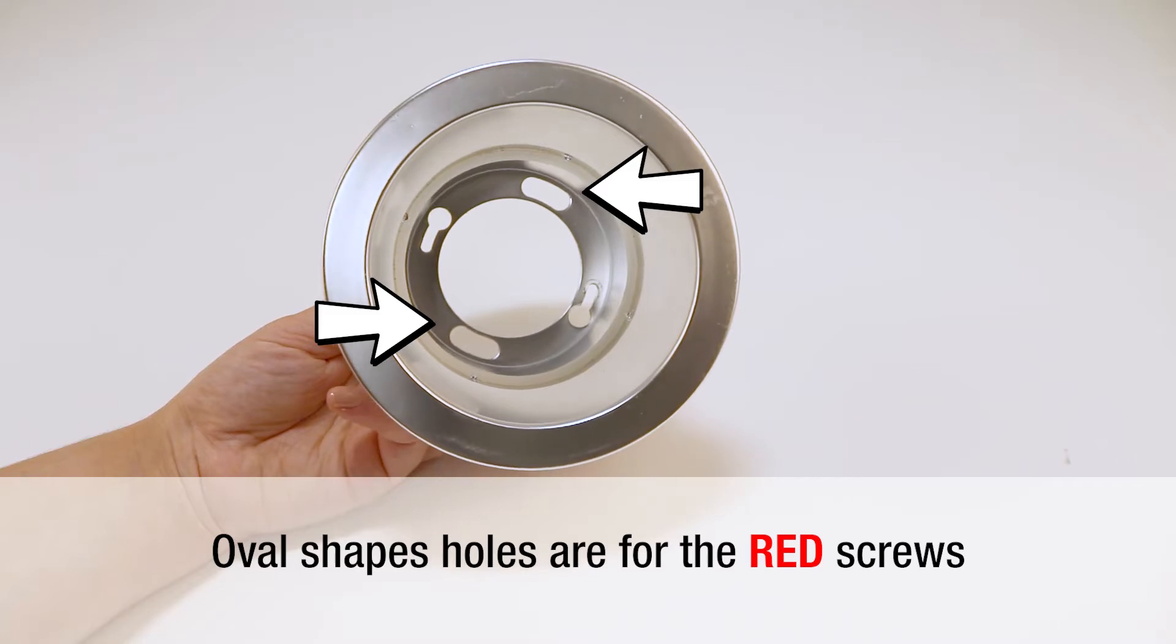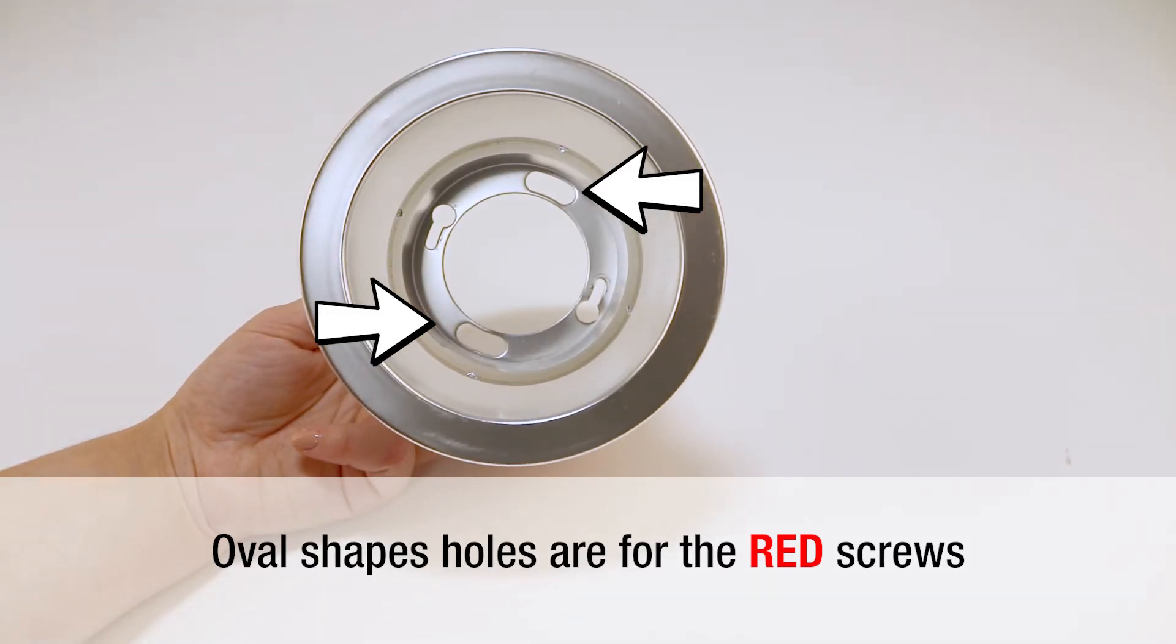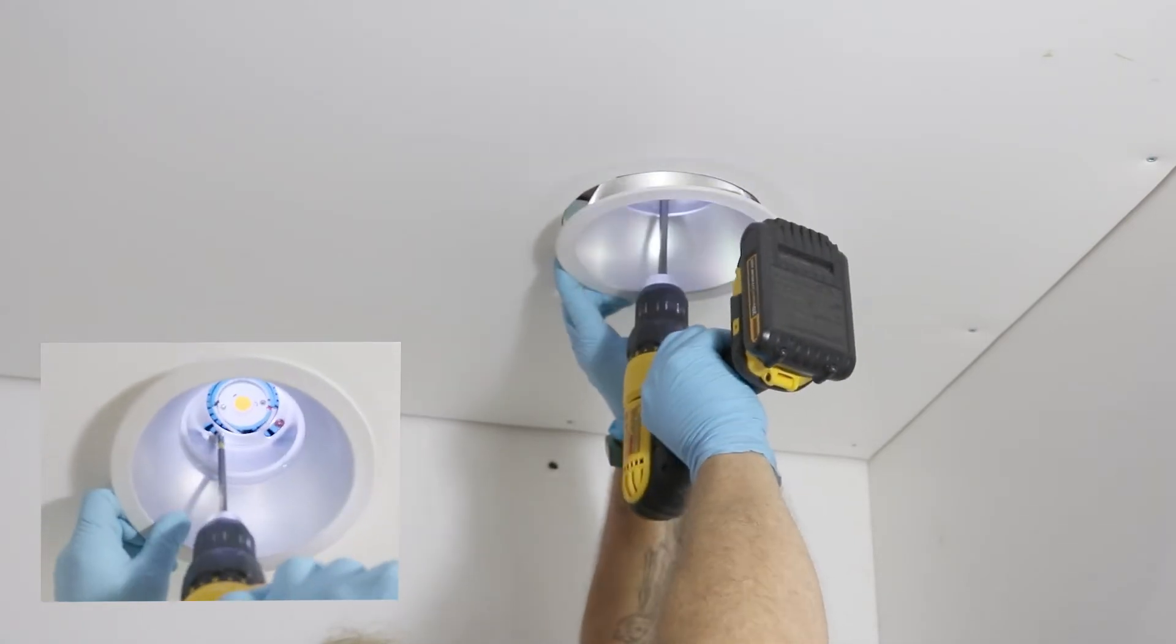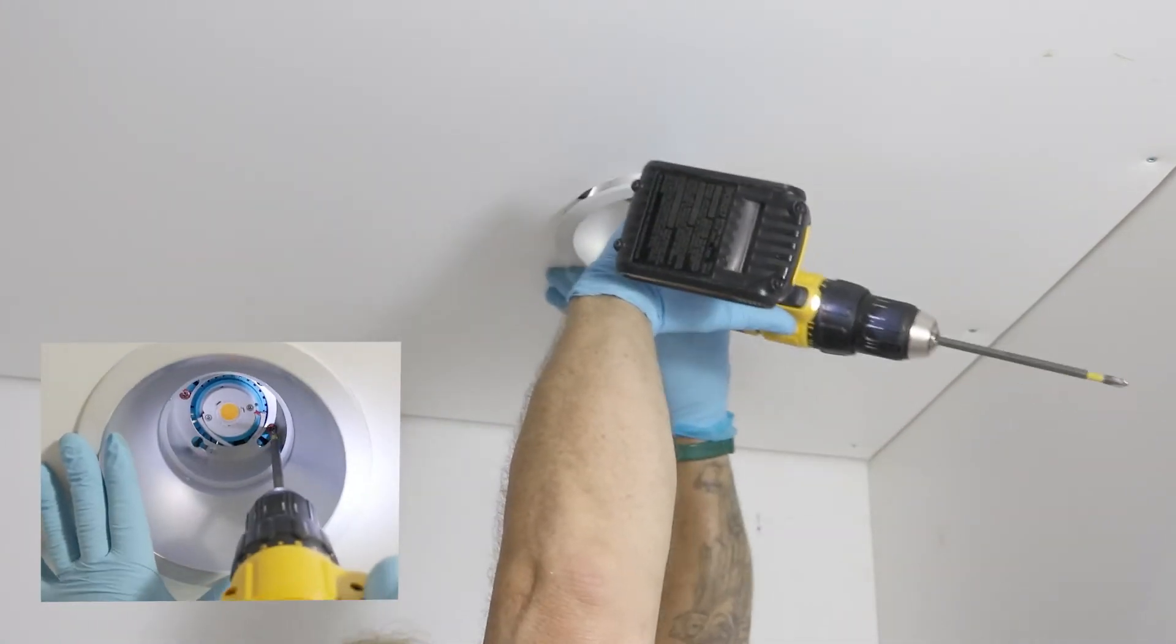Note, the oval shaped holes are for the red screws that raise the reflector to be flush with the ceiling. Screw in the silver screws to tighten the lower reflector and red screws to raise the trim until tightened with the ceiling.